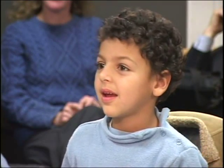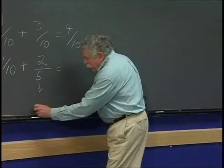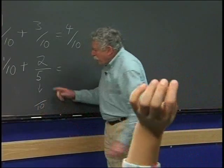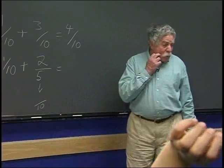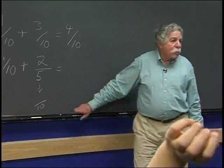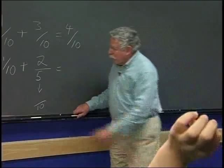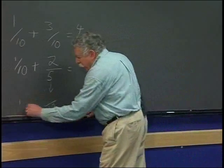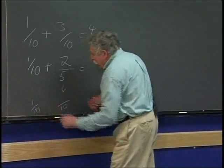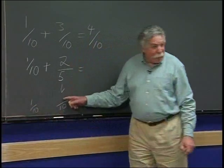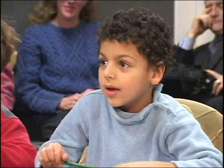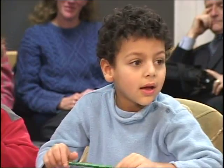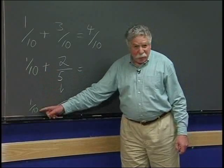Amir says: just turn the 5 into a 10. The teacher echoes this back. Then asks: how does that change the top? Amir responds: so 3/10. The teacher confirms: okay, so this is the 1/10. Then Amir reconsiders, saying: actually, I think that would be 1/10.